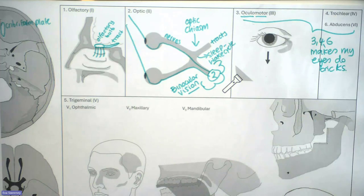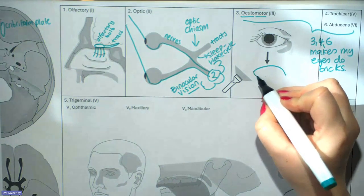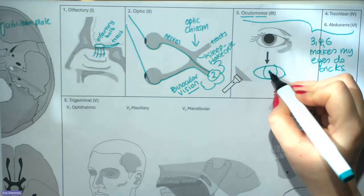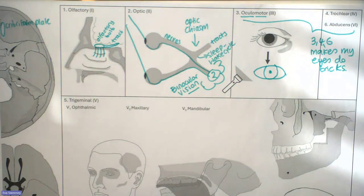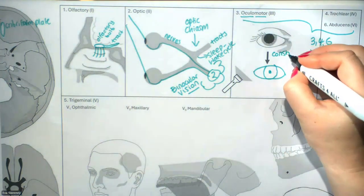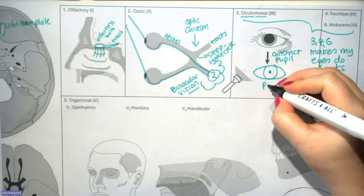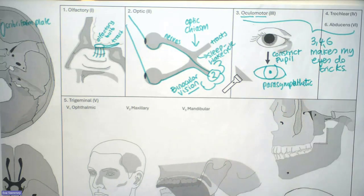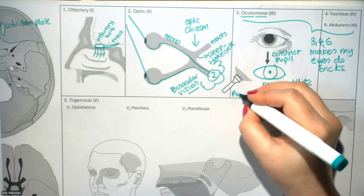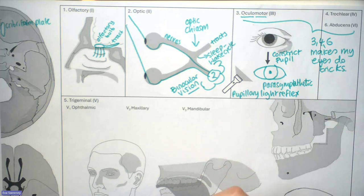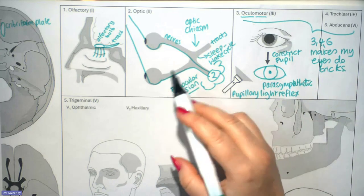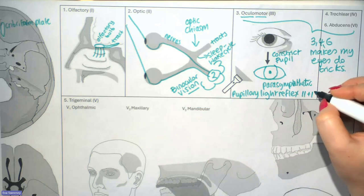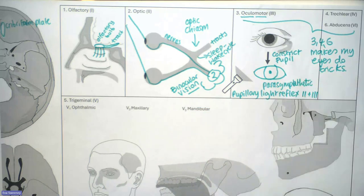In addition to moving the eye, the oculomotor nerve will also have some parasympathetic innervation. It constricts the pupil, which is another function of the oculomotor nerve. This parasympathetic function is important in what's called the pupillary light reflex, which involves two cranial nerves: cranial nerve two, which detects light, and cranial nerve three, which constricts the pupil in response to that light.